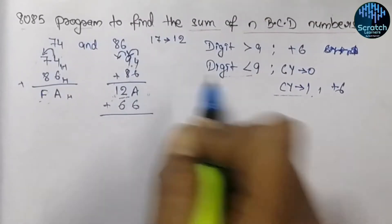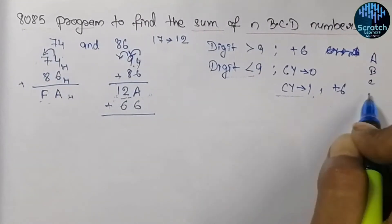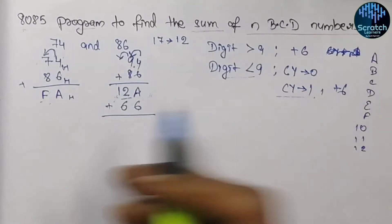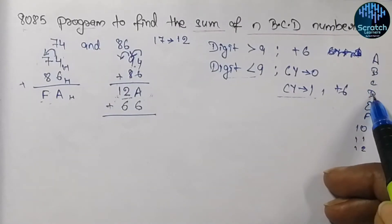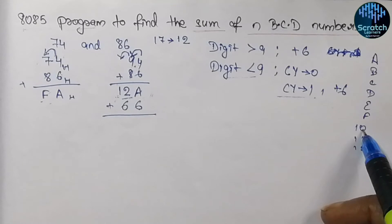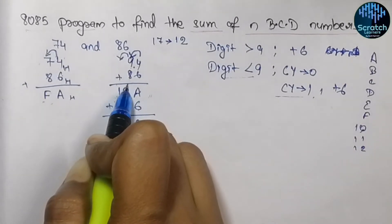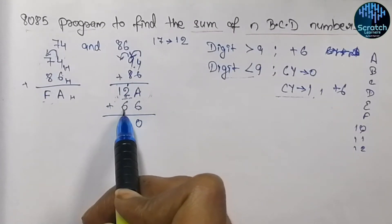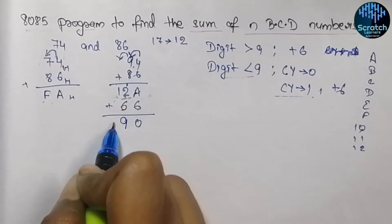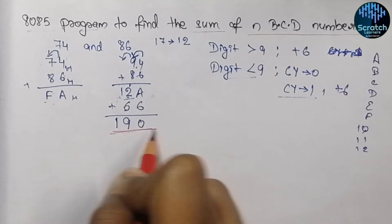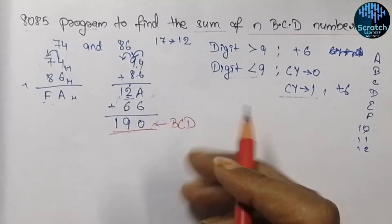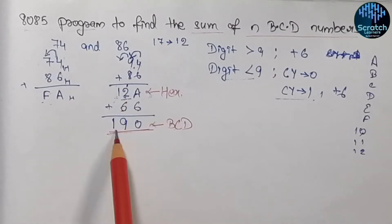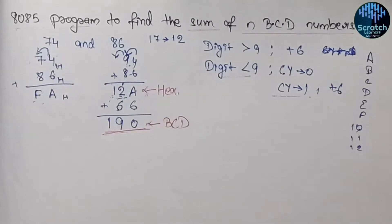So in the addition of 94 and 86 hex, if we want to convert this hexadecimal number into BCD, we have to add 6 to both digits. When A is added with 6 we get 10 hex, because after A comes B, C, D, E, F, then 10 — so A plus 6 equals 10 hex. We write 0 here and 1 goes as the carry. Then 1 plus 2 is 3, and 3 plus 6 is 9. So the BCD result is 190, which is the BCD equivalent of the hex sum.